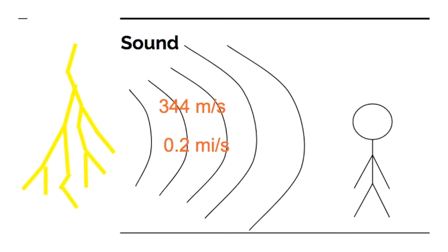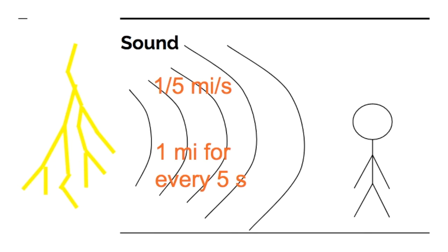In terms of miles that's 0.2 miles per second. So that means the thunder, the sound of the lightning, is coming to you at a speed of 0.2 miles per second or about a fifth of a mile per second, and that means one mile for every five seconds. So for every one second that's a fifth of a mile.